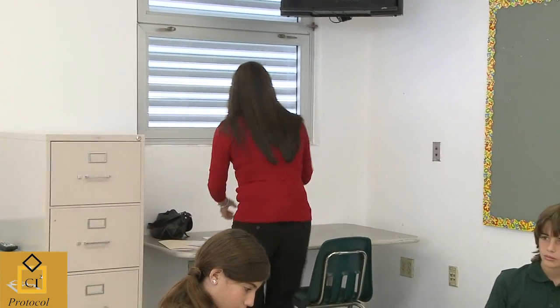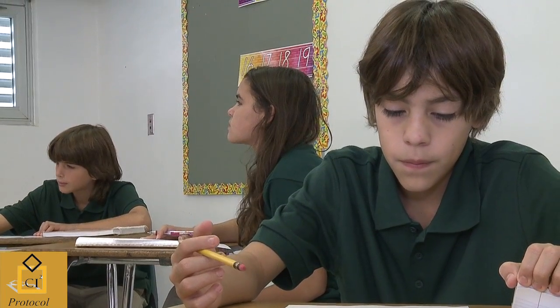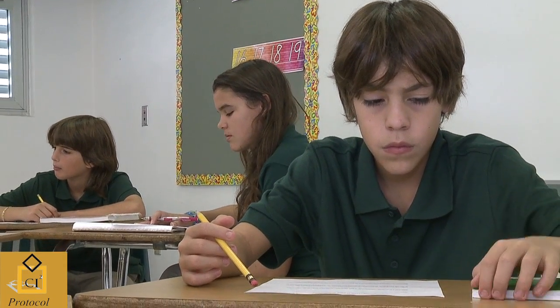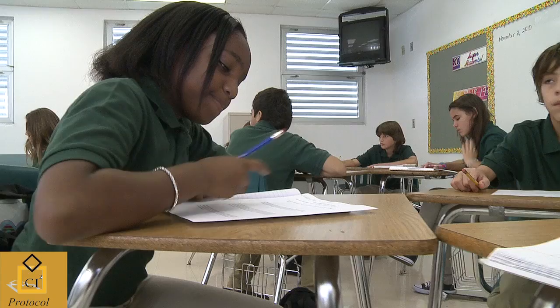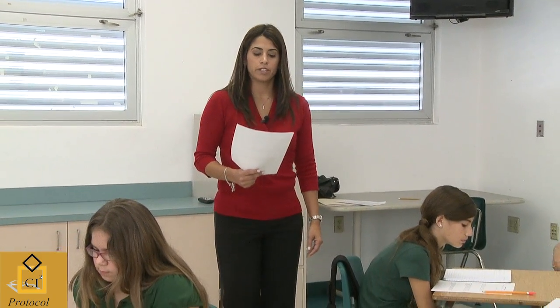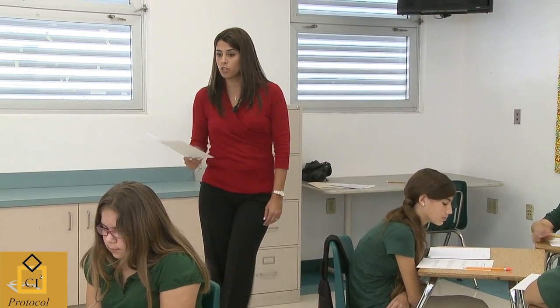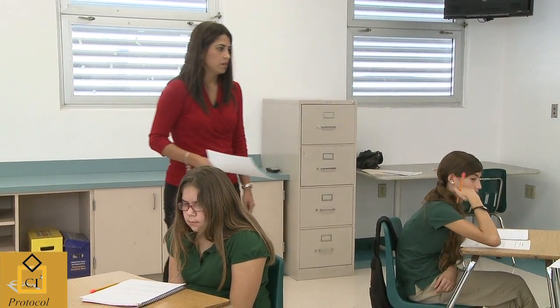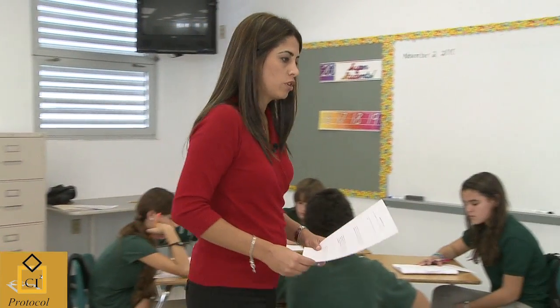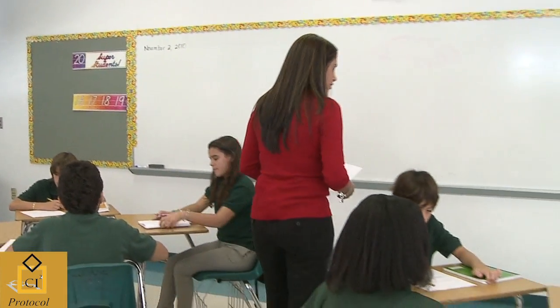I'm going to start off by giving you a worksheet. I want you to analyze one of the problems together. David, can you read that for me, please? Ariel can run four laps in 12 minutes. Susan can run three laps in nine minutes. Who is the fastest runner? Let's really understand what the problem is asking. What is the problem actually asking? Who is the fastest runner between Ariel and Susanna. Now I want you to discuss this problem with your group members, solve it, and share how you solved it. Let's take three or four minutes to solve that problem together.